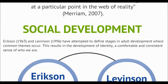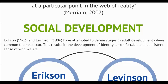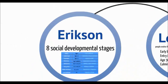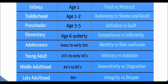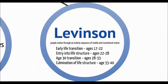Erickson and Levinson also attempted to define stages of adult development where common themes occur, resulting in the development of our identity — a comfortable and consistent sense of who we are. Erickson suggested eight social developmental stages, each with its own psychosocial task: trust versus mistrust in infancy; autonomy versus doubt in toddlerhood; initiative versus guilt in preschool; competence versus inferiority in elementary school. The four stages relating to adult learning are: identity versus role confusion in adolescence to early twenties; isolation versus intimacy in young adulthood up to the early forties; stagnation or generativity in middle adulthood; and integrity versus despair in late adulthood. Levinson suggested that people evolve through an orderly sequence of stable and transitional states: early life up to age 22, entry into life structure between 22 and 28, the big transition through age 30, and culmination of life structure up to age 40.